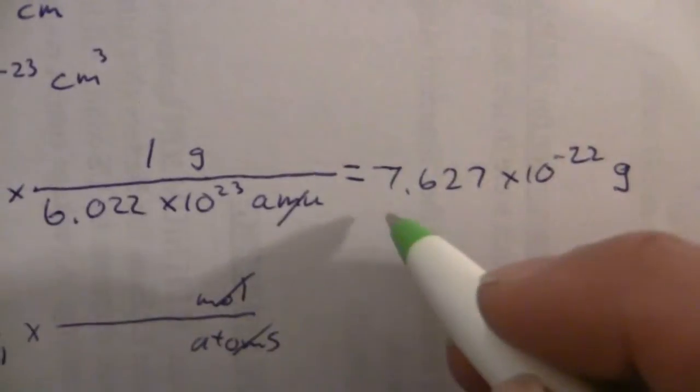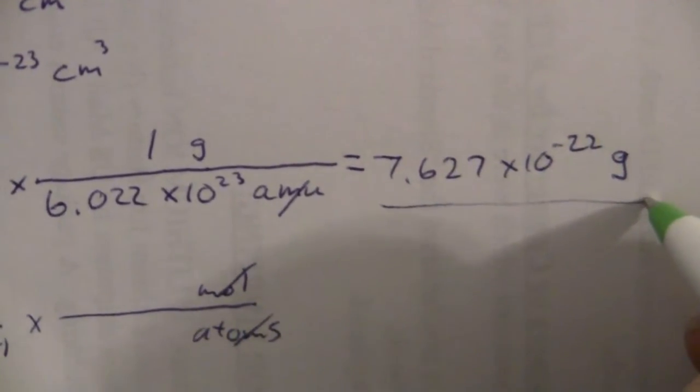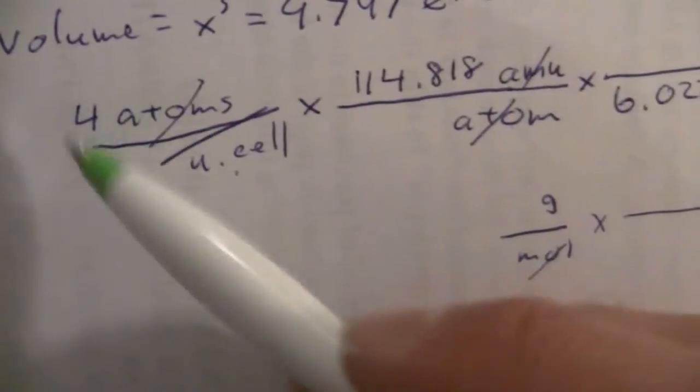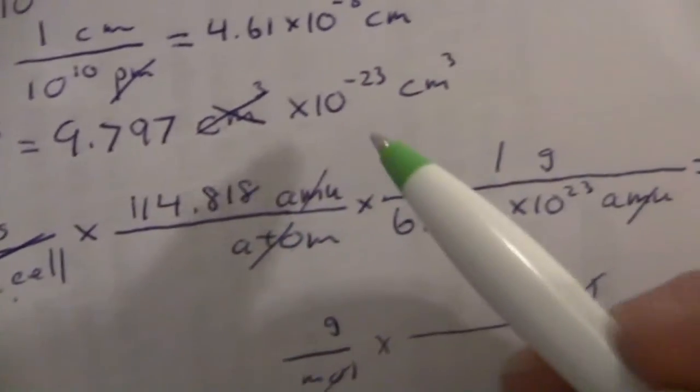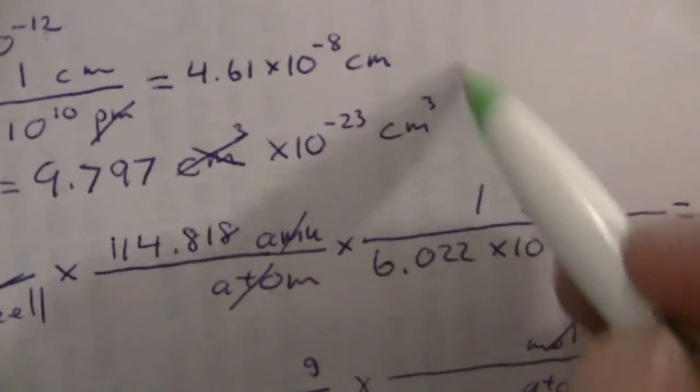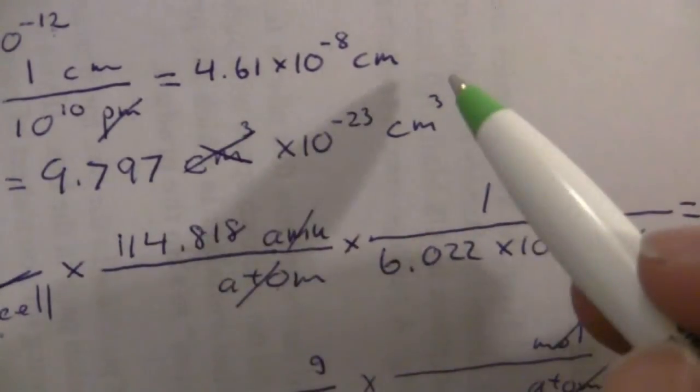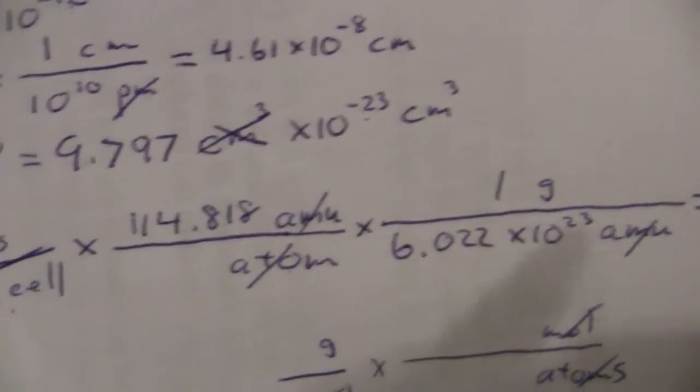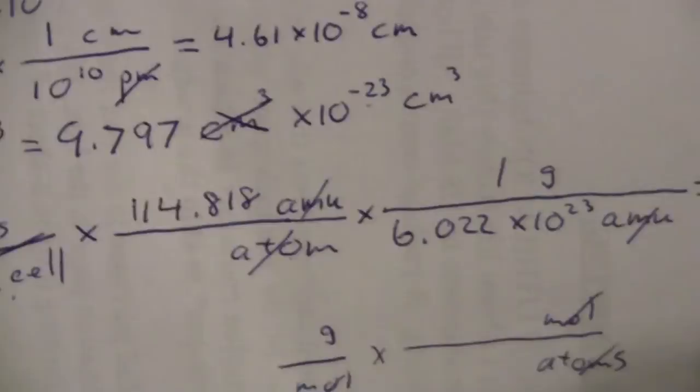So now I have my very tiny mass, of course, because it's just one unit cell. It has all of four atoms in it, and that will correspond with my very tiny volume. So I'm just going to divide these two, the mass by the volume to get the density.